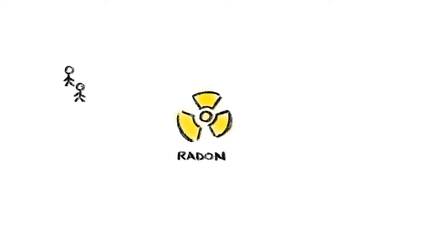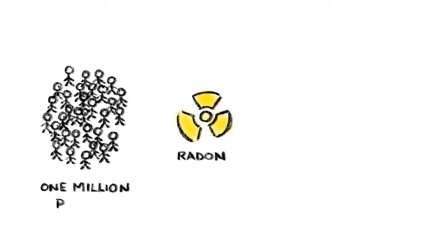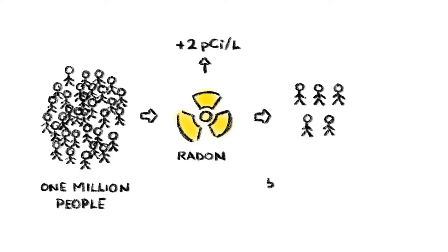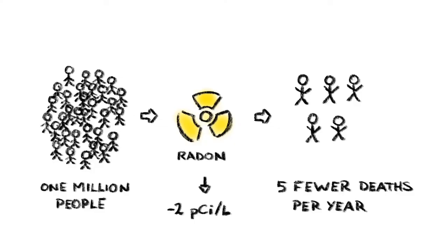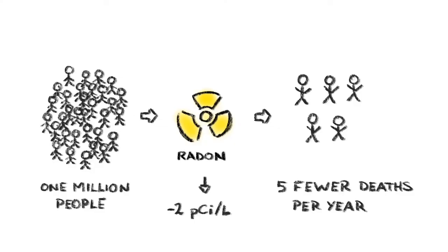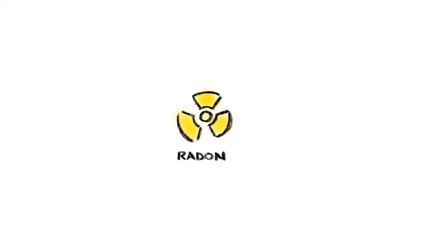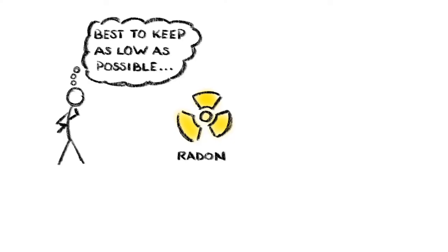Using this estimate of risk versus exposure, it turns out that if you reduce the average exposure level by 2 picocuries per liter, there'd be 5 fewer radon-related deaths per million people each year on average. In other words, small increases and decreases in exposure do make something of a difference. And this is why it's important to keep your radon exposure as low as you can possibly get it.